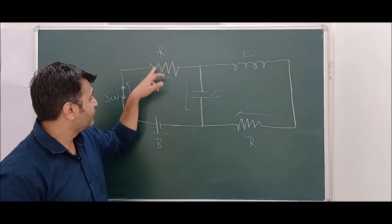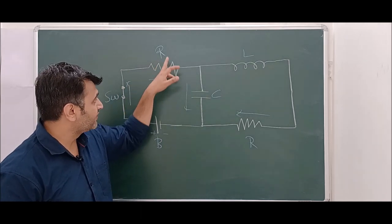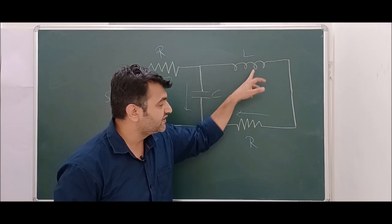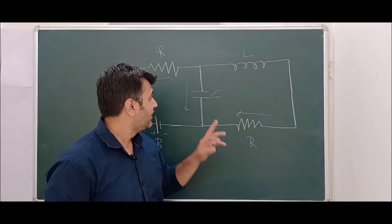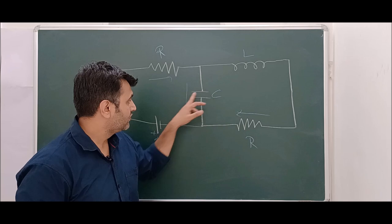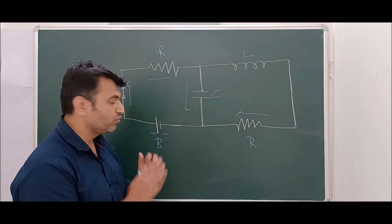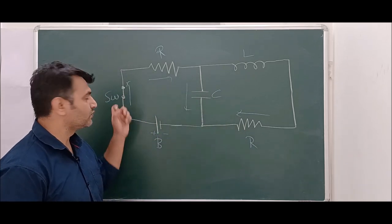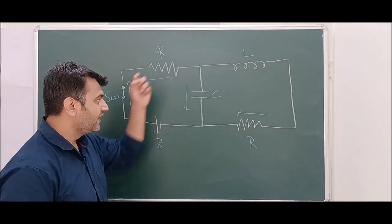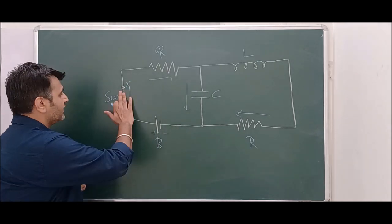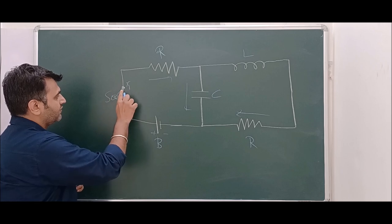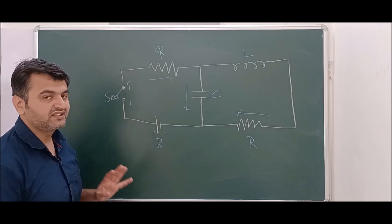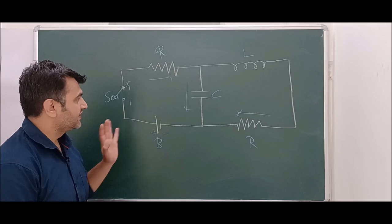Resistors are usually denoted by a specific symbol. The inductor is usually a coil shape — that's why you see the coil. The capacitor has two lines, two terminals. Here is a battery and here is a switch. If the switch is closed, that means the current is flowing. If the switch is open, that means the current is not flowing.